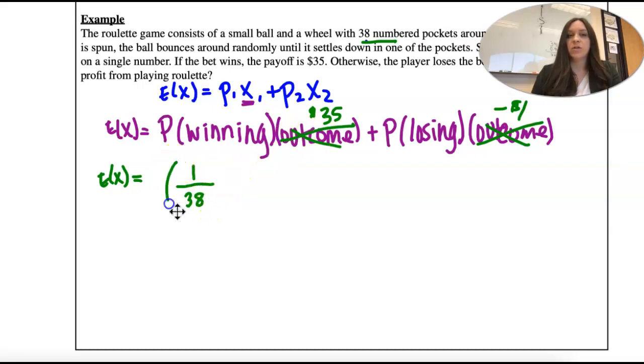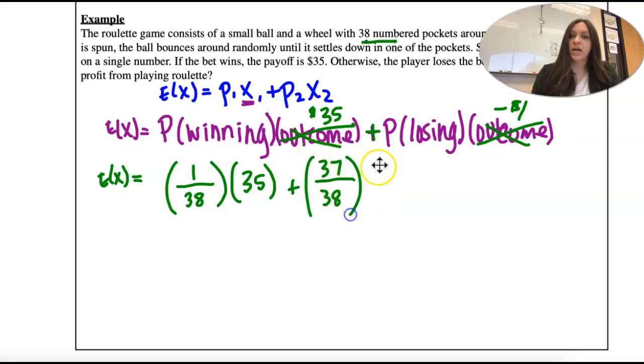And we're going to multiply that by our outcome, which is the positive 35. Plus, okay, now think of the probability of losing. There's still 38 outcomes. And then those other 37 spaces you could land in, you'll lose. Okay, so times that by negative 1. That would be the outcome if you lose.